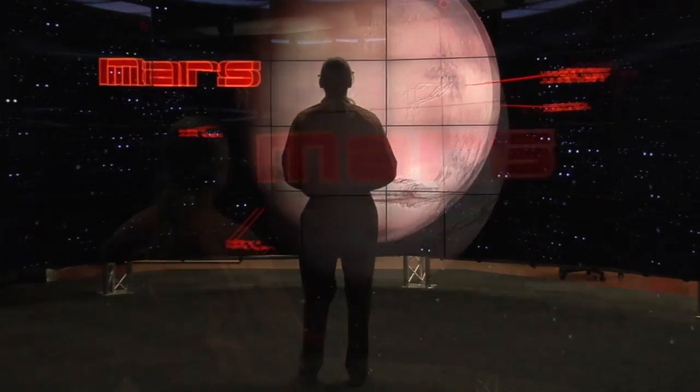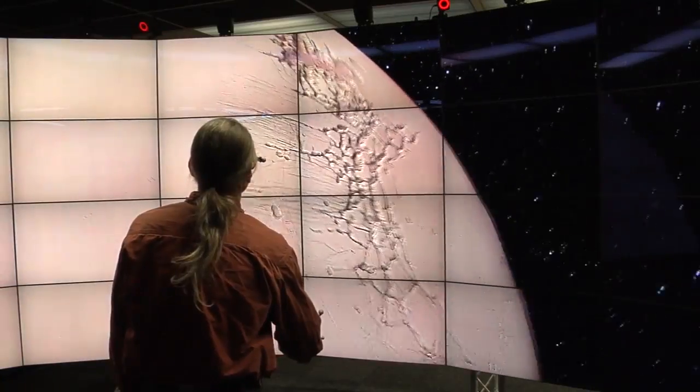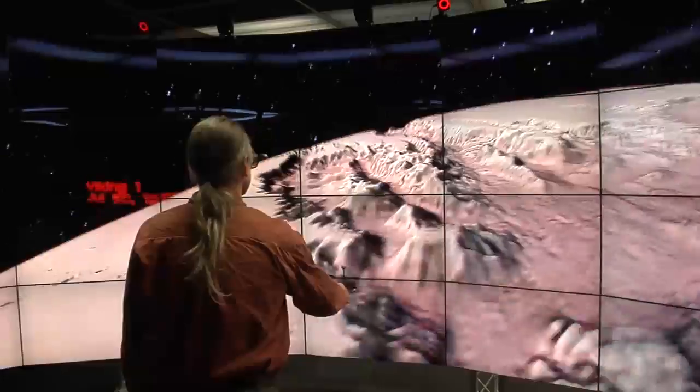The camera tracking system allows Cave 2 to draw the 3D world from the point of view of the tracked viewer. The ambisonic audio system enables sounds to be placed in 3D space.